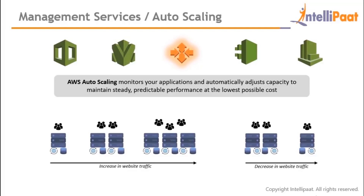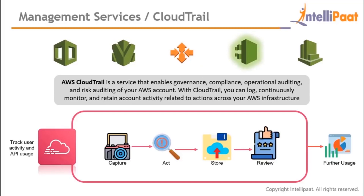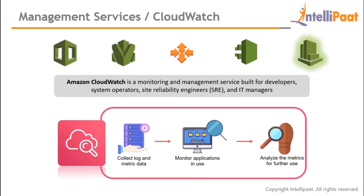AWS CloudTrail is a web service that records activity on your account and delivers log files to an Amazon S3 bucket. Using CloudTrail, you can log, continuously monitor, and retain account activity related to actions across your AWS infrastructure — checking which services were used, by which users, and in what quantity. These logs can be stored in S3 and reviewed later for reporting.